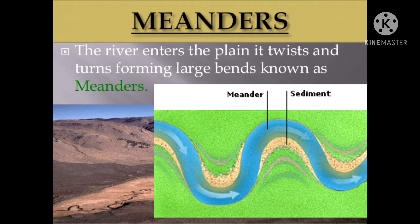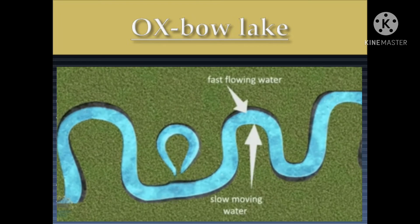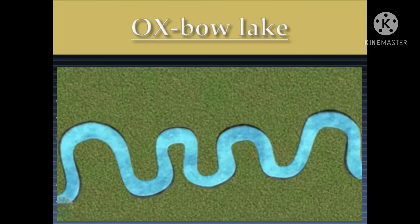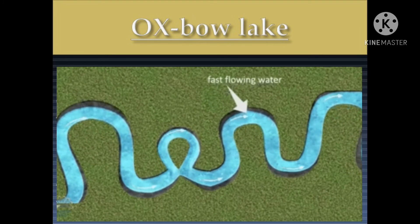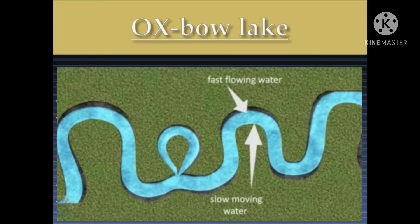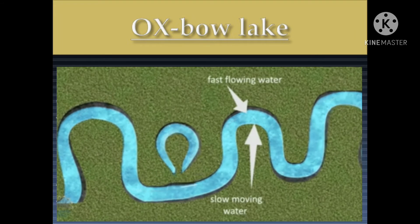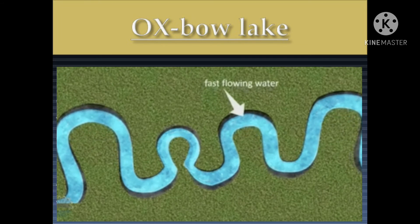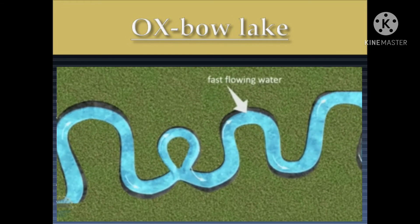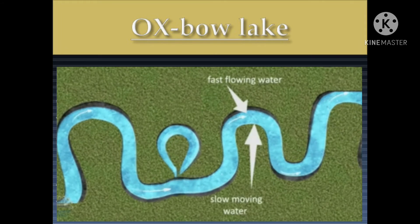Next is meanders. When the river enters the plain, it twists and turns, forming large bends known as meanders. Due to continuous erosion and deposition along the sides of the meander, the ends of the meander loop come closer and closer. In due course of time, the meander loop cuts off from the river and forms a cut-off lake, also called an oxbow lake.